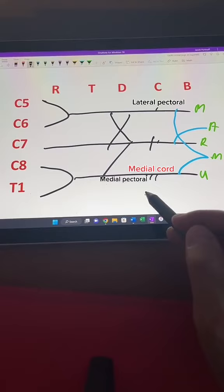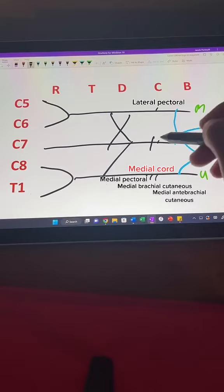Then here, I'd purposely draw this one longer, because we have an upper subscapular, lower subscapular, and thoracodorsal. Dorsal, posterior, back. That's our posterior cord.